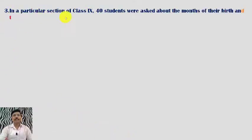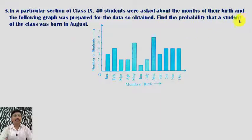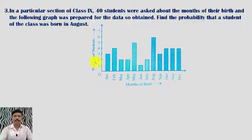In a particular section of Class 9, 40 students were asked about the months of their birth and the following graph was prepared for the data obtained. The months of birth are along the x-axis and the number of students is along the y-axis. The total number of students is 40. We have to find the probability that a student of the class was born in August.